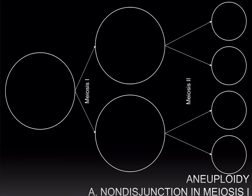Non-disjunction is the failure of chromatids to separate during meiosis. One type of non-disjunction occurs in meiosis I when you have a failure in the separation of the non-sister chromatids during meiosis I.